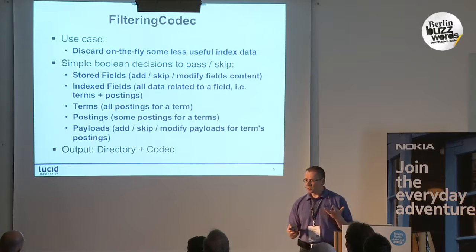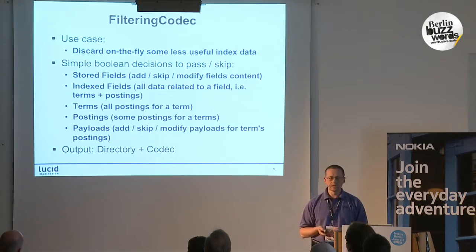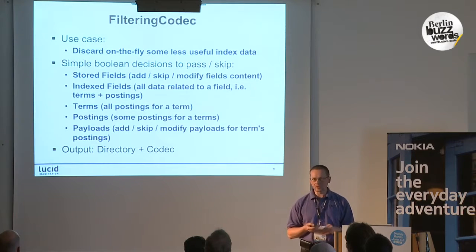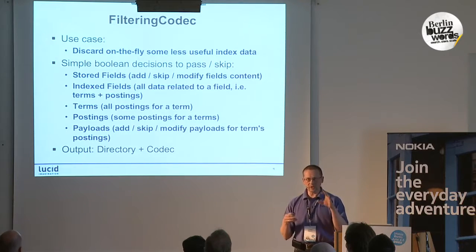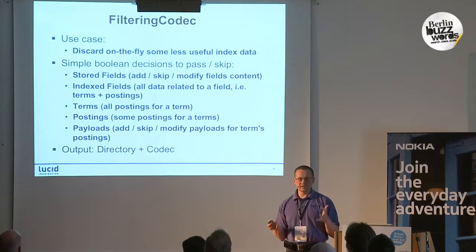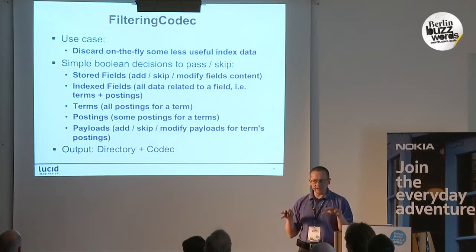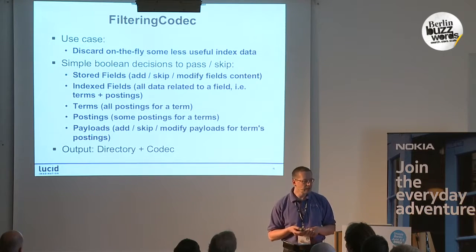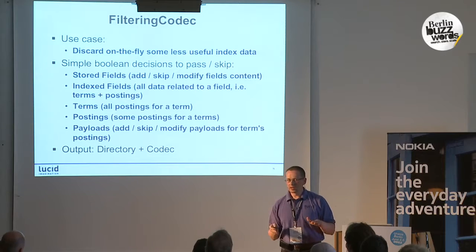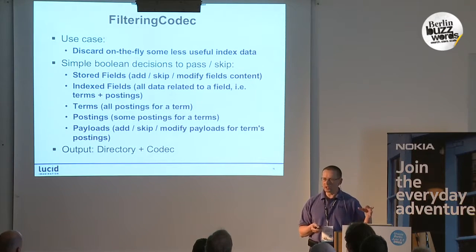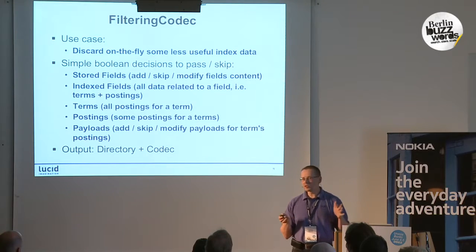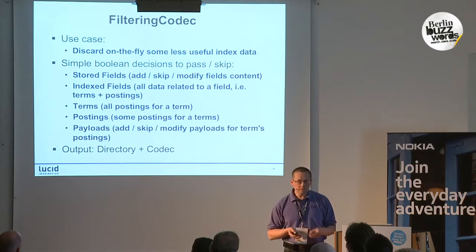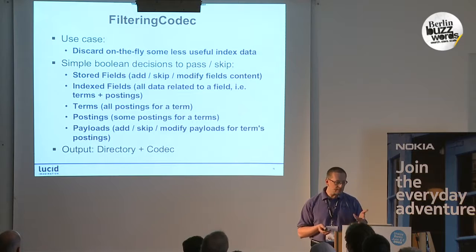Another very simple but powerful concept is a filtering codec. There is sometimes a need to get rid of data that is not crucial to getting correct top-N results from search, but that spurious data weighs down the index and makes searches take longer than necessary. So you can filter out data on the fly. There is already a pruning package in Lucene that allows you to run this filtering as a post-processing step on a static index, but the filtering codec allows you to do it on the fly.